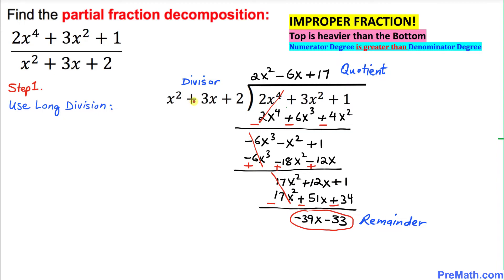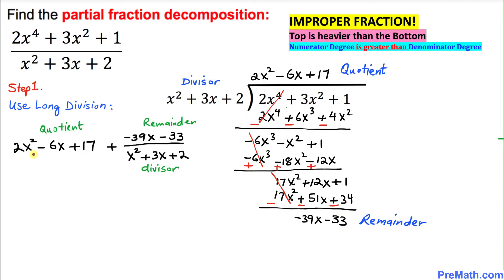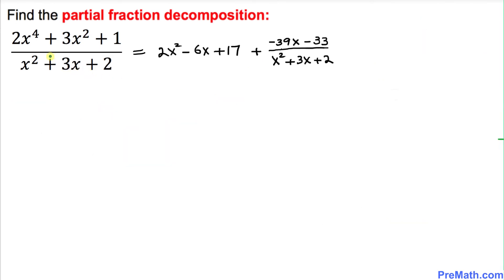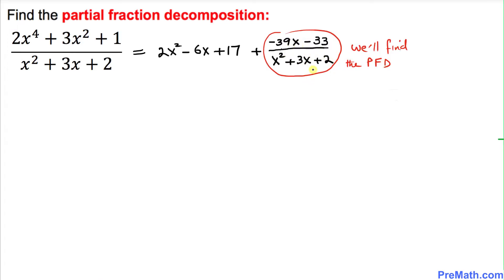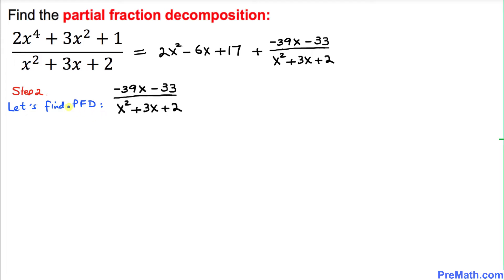So we can write the original expression as: the quotient 2x² − 6x + 17 plus the remainder over the divisor, giving us (−39x − 33) / (x² + 3x + 2). Now let's focus on this proper fraction part and find its partial fraction decomposition.